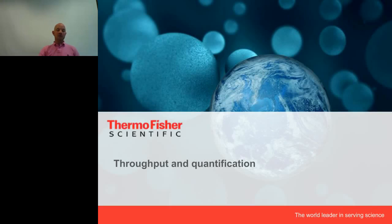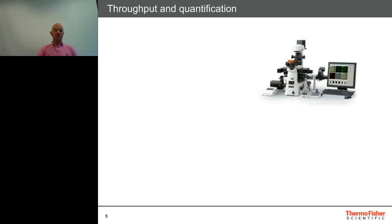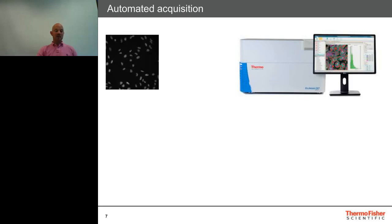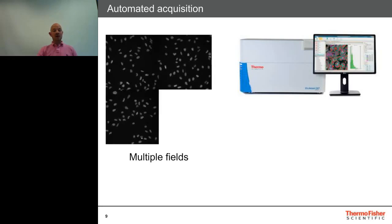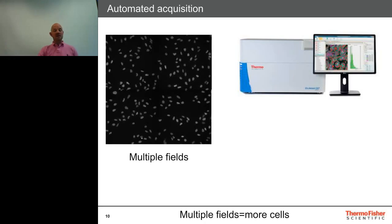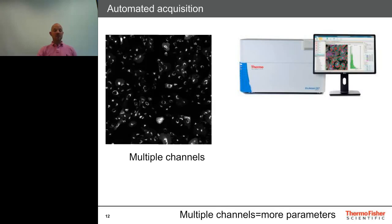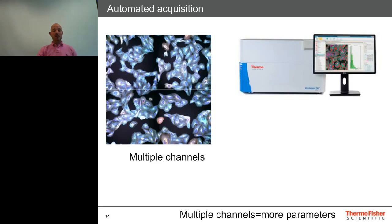So how do we address those drawbacks of throughput and quantification? We're starting with essentially a regular fluorescence microscope, but we package it up in a box. With high content imaging and analysis, we don't just stop at one image — the system takes another field and another and another. This automated acquisition allows us to gather a large number of cells from a very short imaging protocol. Using multiple emission filters, we can get many channels and build up an in-depth picture of the spatial and temporal distribution of molecules within cells.